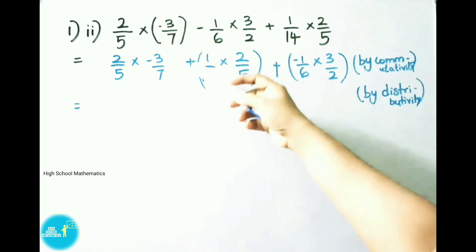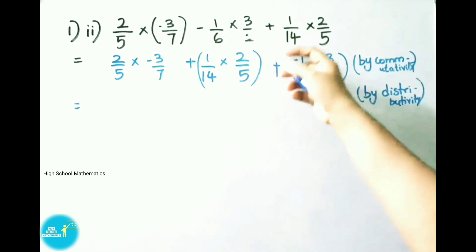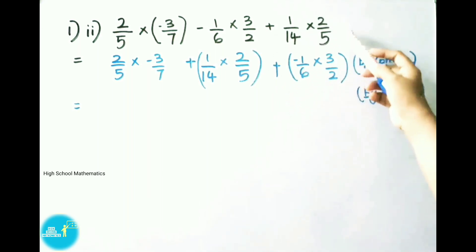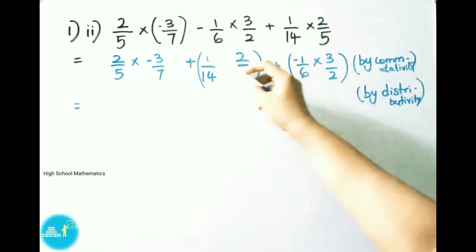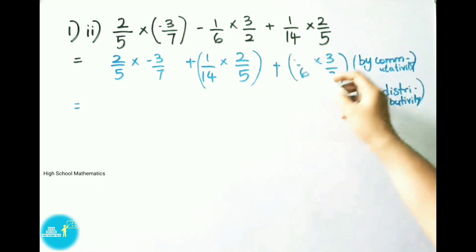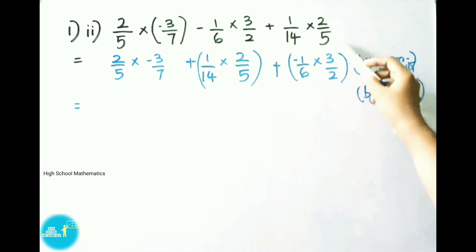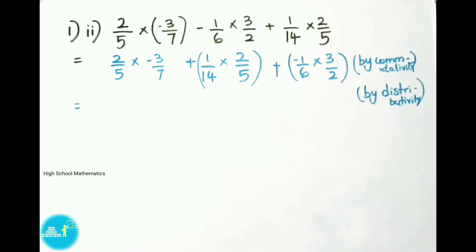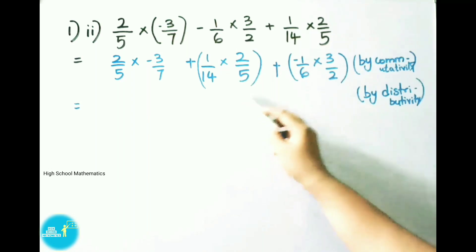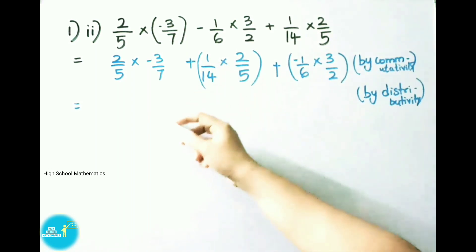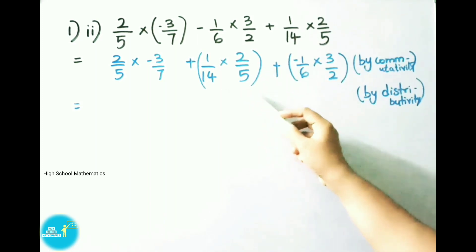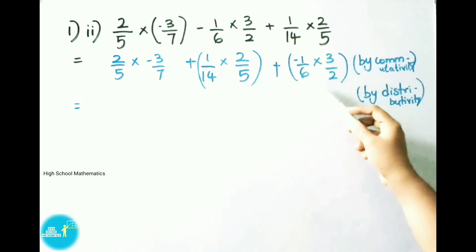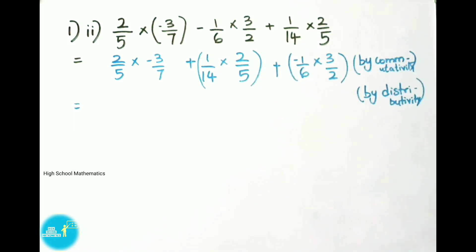See now, first question, second sum: 2 by 5 into minus 3 by 7, minus 1 by 6 into 3 by 2, plus 1 by 14 into 2 by 5. Let us see the solution. Now let us apply commutative property for these two values. Let us treat minus 1 by 6 into 3 by 2 as A, and 1 by 14 into 2 by 5 as B. Applying commutative property, A plus B can be written as B plus A. So we have written 2 by 5 into minus 3 by 7, then B value, that is 1 by 14 into 2 by 5.